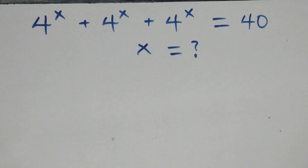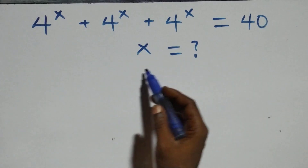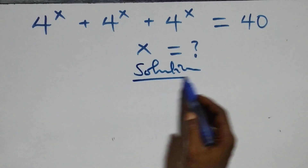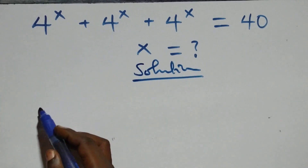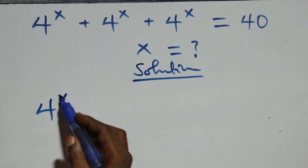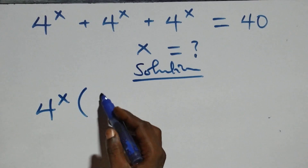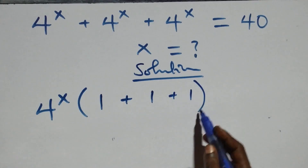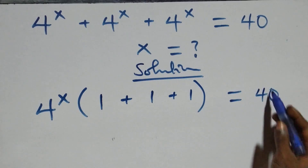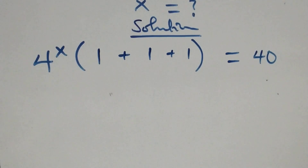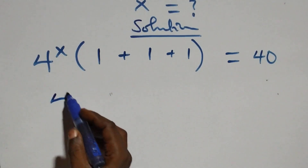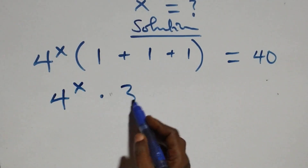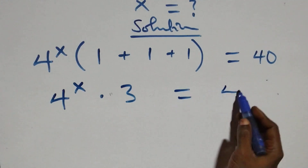Hello, you are welcome. How to solve this nice exponential equation. From what we have here, we factor 4 raised to power x out. That is, we have 4 raised to power x into brackets, and we are left with 1 plus 1 plus 1 in brackets, equals to 40. This becomes 4 raised to power x times 3 equals to 40.